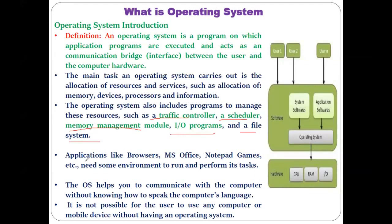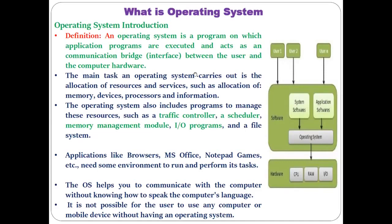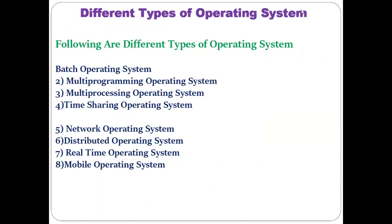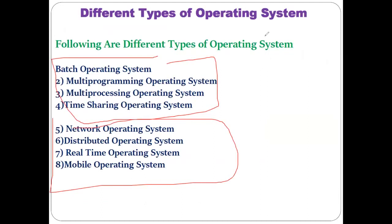If you want to utilize applications like a browser, Microsoft Office, Notepad, or games, the only platform required to run all these things is the operating system. You cannot directly communicate with the computer because our language cannot be understood by the computer directly. That is the reason we take the help of the operating system. Without an operating system on your computer or mobile, you cannot utilize them — that is the importance of the operating system.